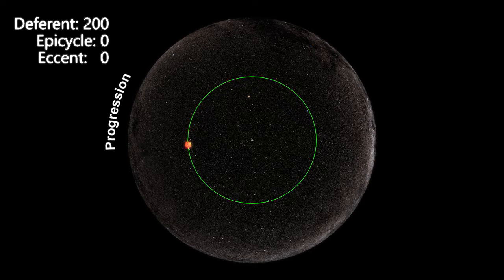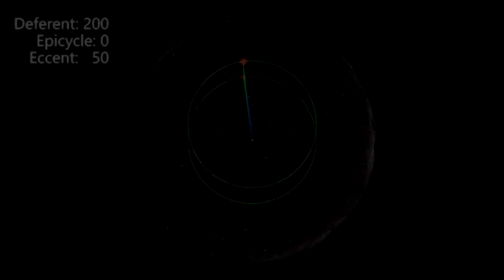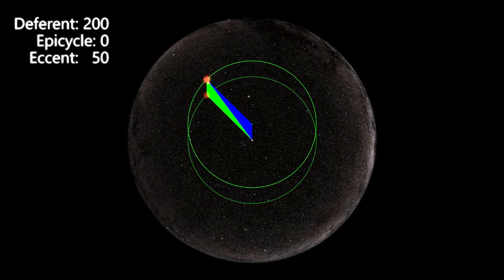These inner and outer planets display a progression and regression with reference to the backdrop of the zodiac, against which their position is gauged, unlike the Sun, which, though it appears to change in speed, never stops and reverses direction.